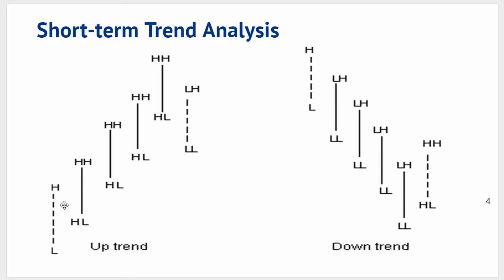Looking here at the diagram, on the left hand side we see an example of an uptrend turning into a downtrend. The way that we analyze on a bar to bar basis: let's imagine we want to determine the trend in that second bar. We compare the highs and lows of that second bar to the immediate previous bar. We compare the high to the previous high — we have a higher high. We compare the low to the previous low — we have a higher low. Therefore by our definition we have an uptrend in place.